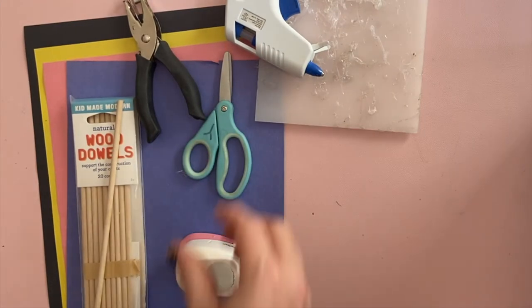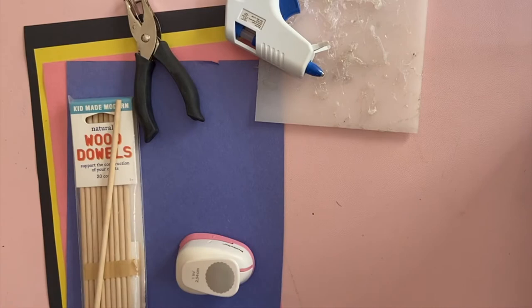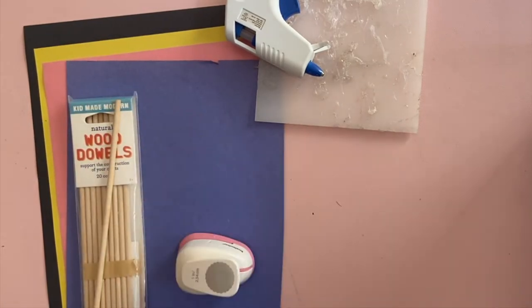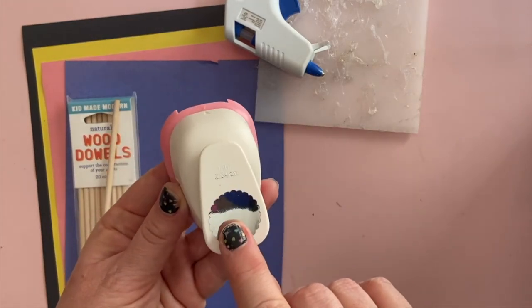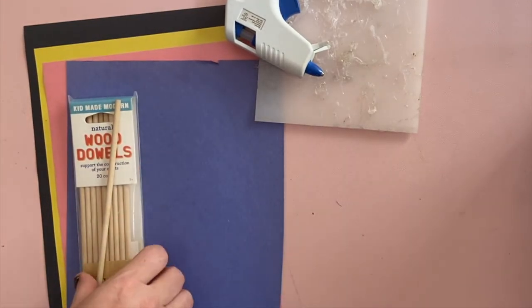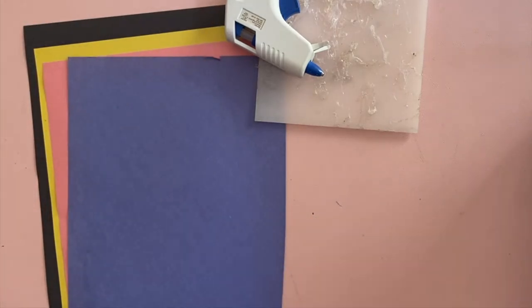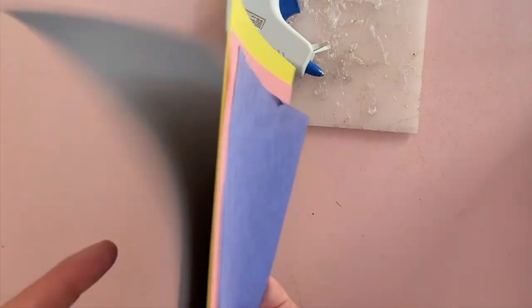Here's what you need. Squeezy glue, a pair of scissors, a single hole punch, a one-inch circle punch. If you don't have that, that's okay, you can draw a circle. One of these wooden dowels and four sheets of normal size construction paper and a hot glue gun.